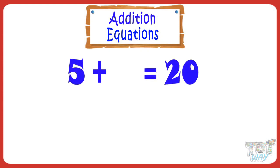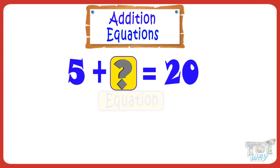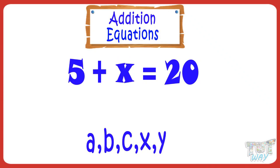One number must be added to 5 to get 20. We can write this mathematical question in the form of an equation, like this. We can replace the question mark with any alphabet, like A, B, C, X, or Y, and our equation becomes 5 plus X equals 20.